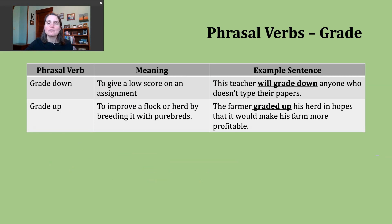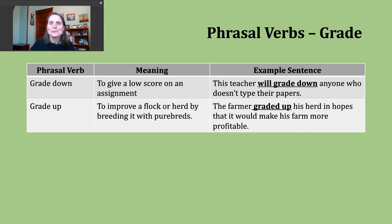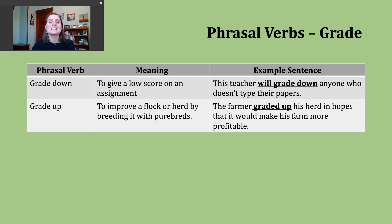There are two phrasal verbs for us to discuss. These might not be the most common things you hear, but it's always good to be aware. The first you might encounter is to grade down, which is often used to mean to give a low score on an assignment. An example: 'This teacher will grade down anyone who doesn't type their papers.' There started to be an expectation that things would be typed — a more sophisticated presentation versus something handwritten — so this sentence is talking about assessing or giving a lower score.